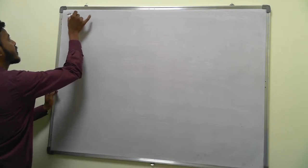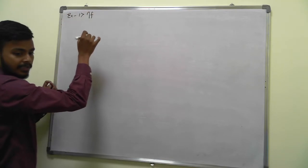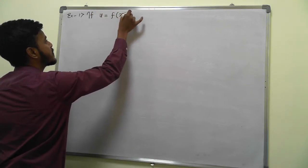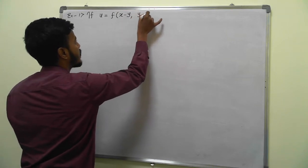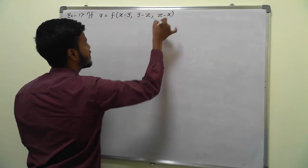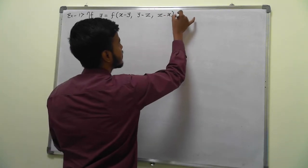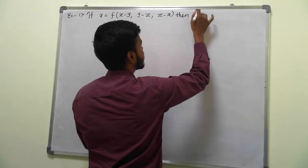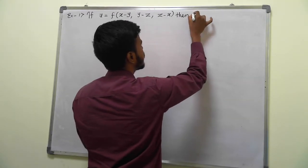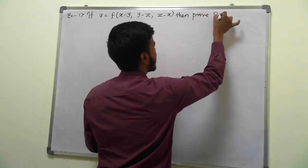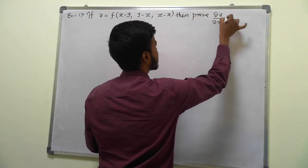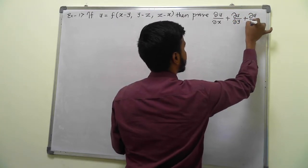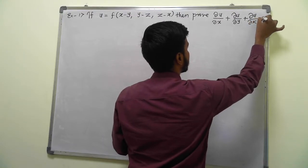Example number one. If u is a function of (x−y), (y−z), (z−x), then prove that ∂u/∂x + ∂u/∂y + ∂u/∂z = 0.